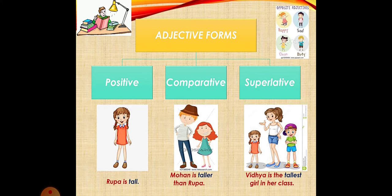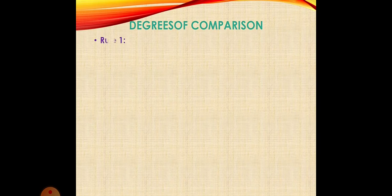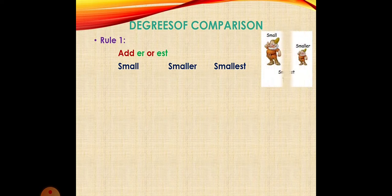Now coming on to the rules. There are certain rules to form adjectives showing different degrees of comparison. Number one: to some adjectives, we simply add ER or EST, as in small, smaller, smallest.